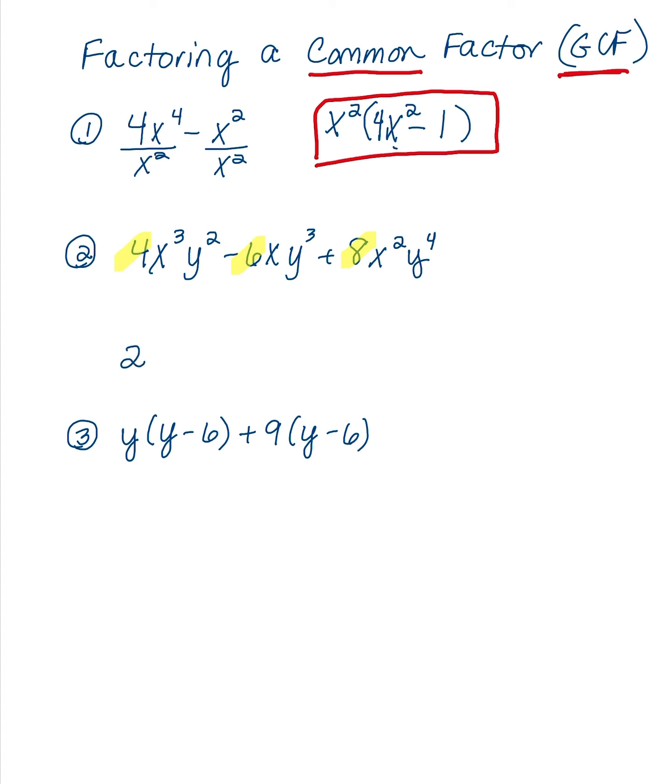Then look at the x's, and all three terms have at least one x, so I can factor out an x. And then if you'll look at your y's, all three terms have a y. In fact, they all have at least a y squared, so that means I can factor out the y squared. So my greatest common factor is 2xy squared.